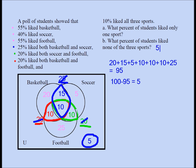Now, what percent of students liked only one sport? Those are the only-one-sport regions: 20 plus 5 plus 25 equals 50. So 50% of the people liked only one sport. The answer to part A is 50, and the answer to part B is 5.